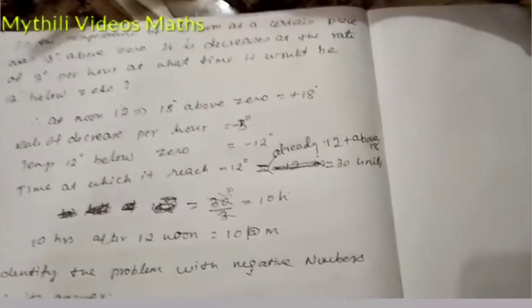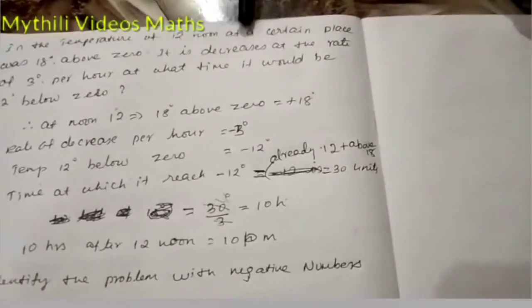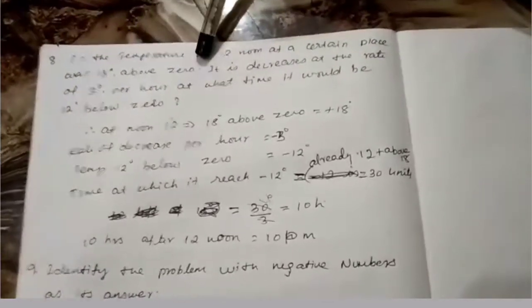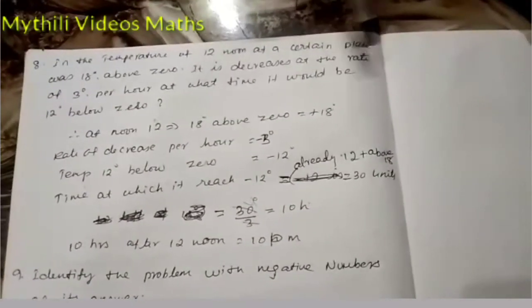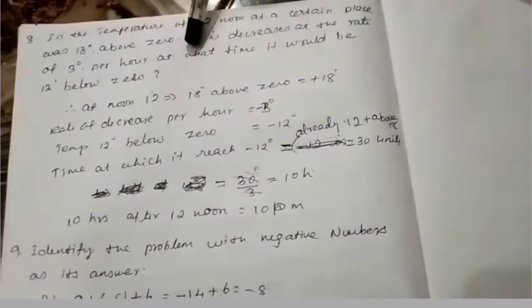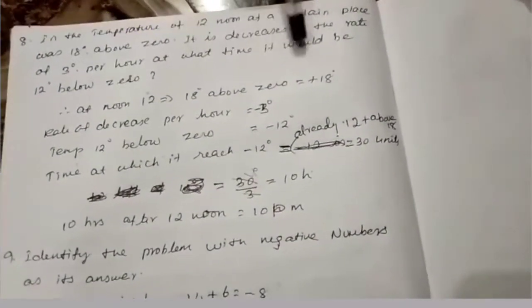Okay, we will solve the eighth problem. The temperature at 12 noon at a certain place was 18 degrees above zero. It decreases at the rate of 3 degrees per hour. At what time will it